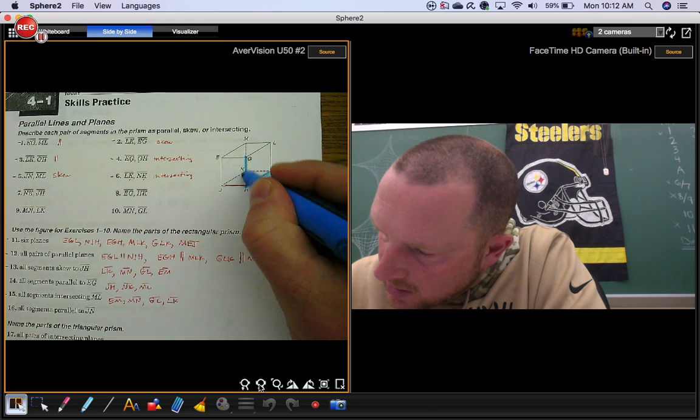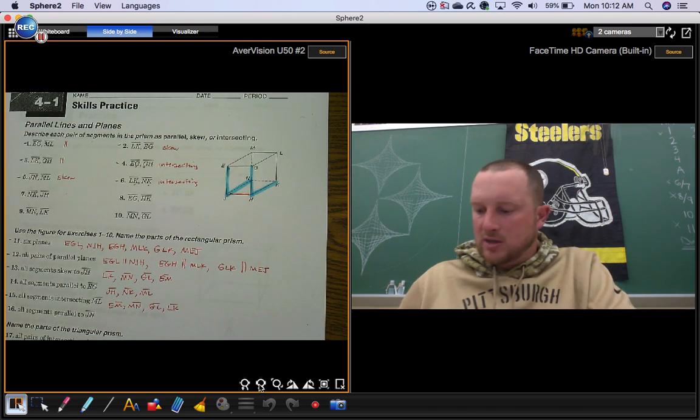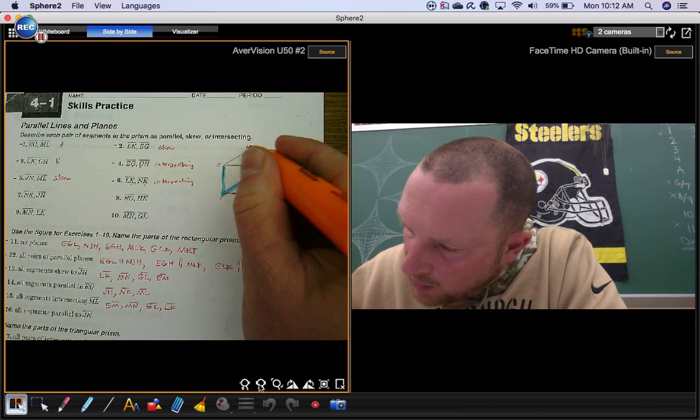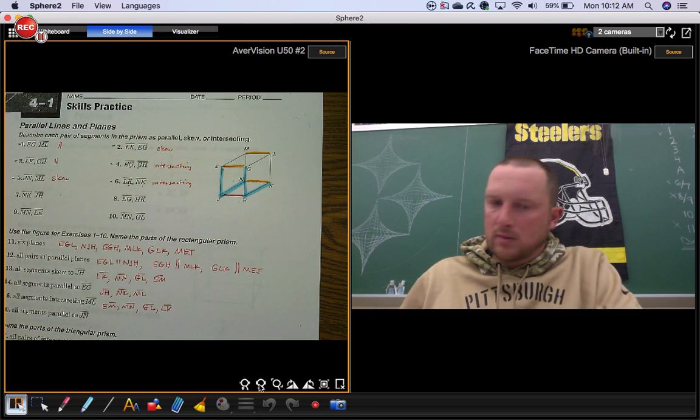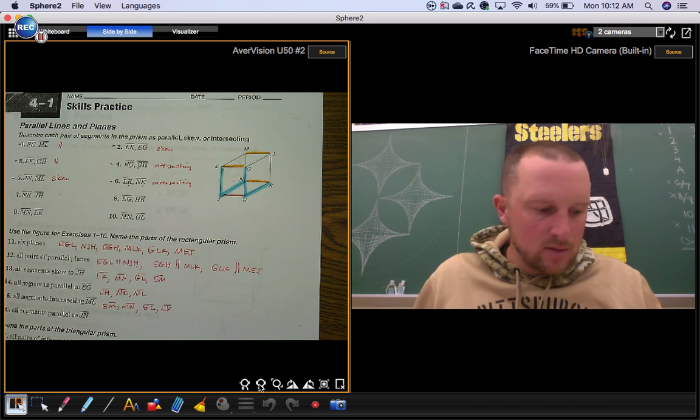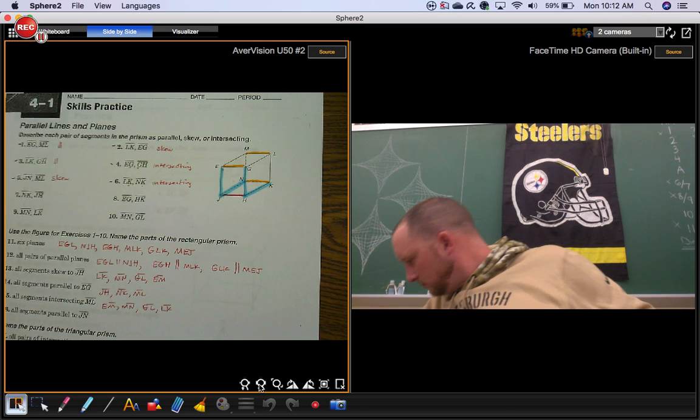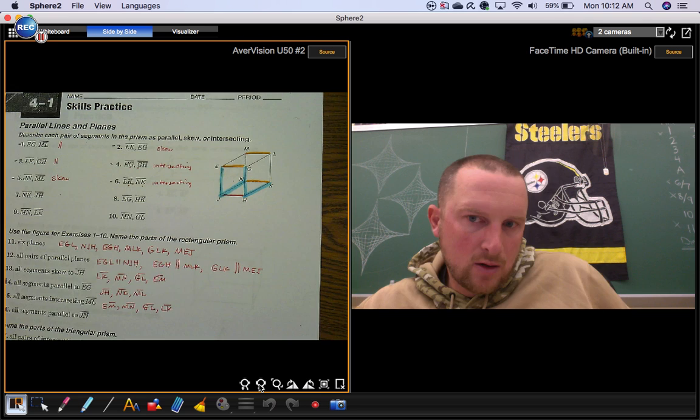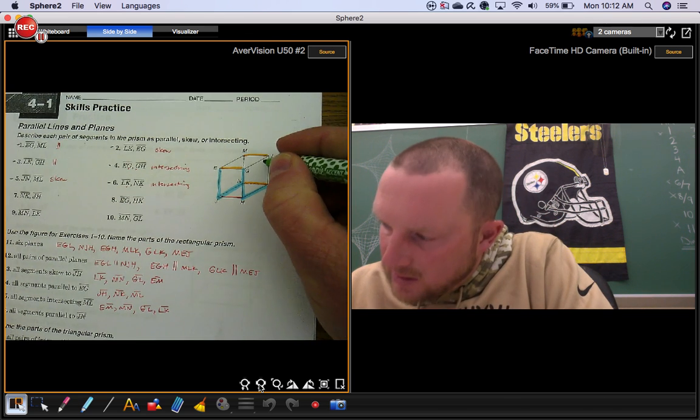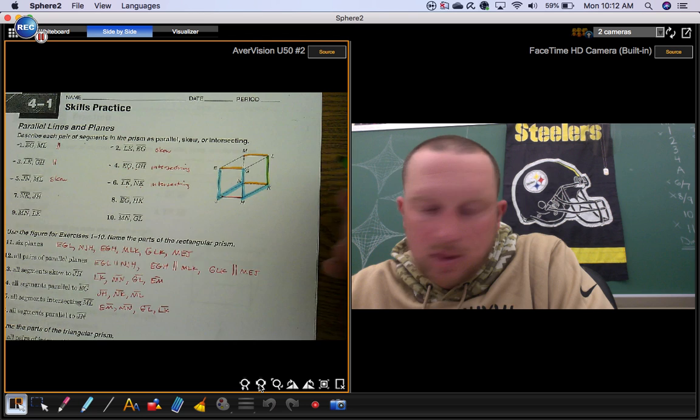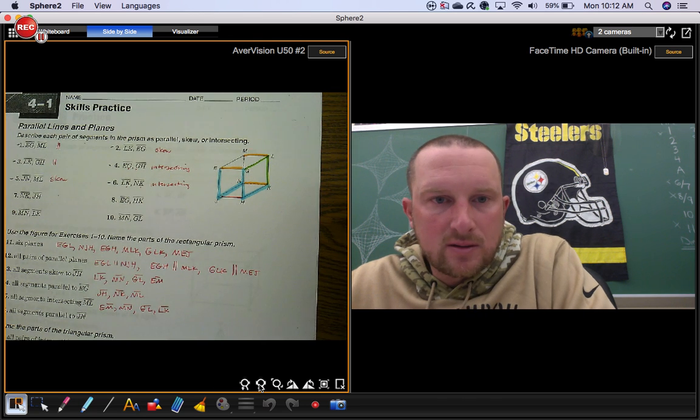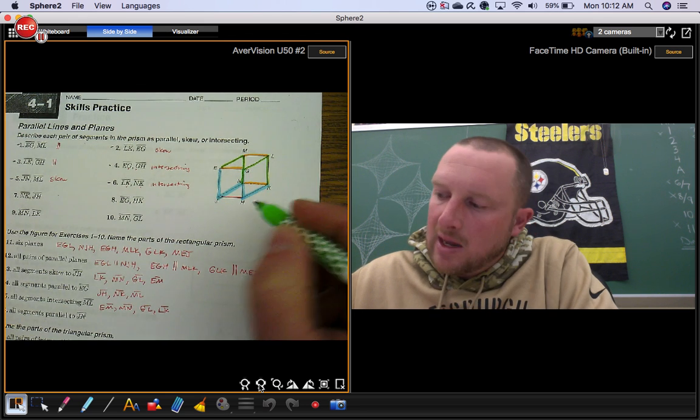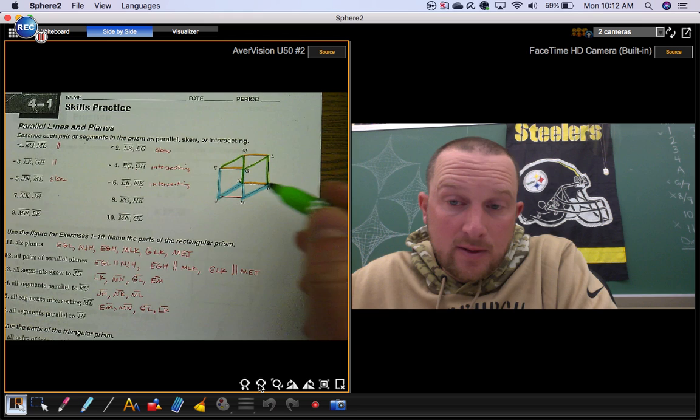For example, these segments touch segment JH, so they can't be skewed to it. Also, skewed segments aren't parallel to each other, so you can cross off all the ones that are parallel to it. And notice what you're left with. I'm going to find a different color here. The green segments are going to be the ones that are skewed to it, because this one doesn't touch it, and it's not parallel to it. This one doesn't touch it, it's not parallel to it. And same thing with these two. So those four green segments don't touch the red one, and they're not parallel to it either.